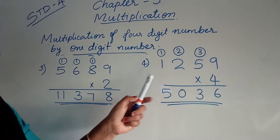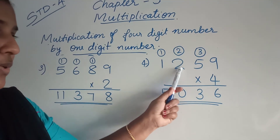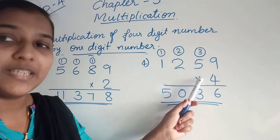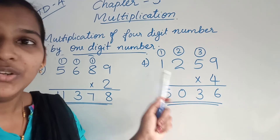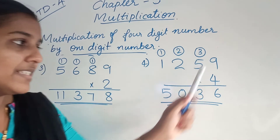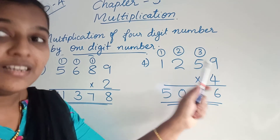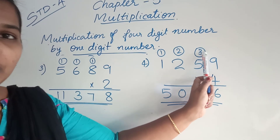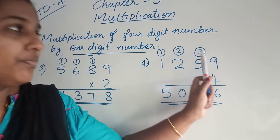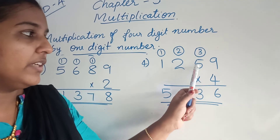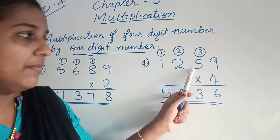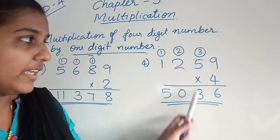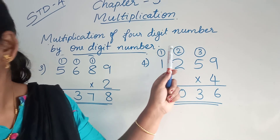Now the next example question: 1,259 × 4. Here you have to multiply all these numbers by 4. 4 nines are 36. From 36, you can write 6 here and 3 carry over to the next place. Then 4 into 5. 4 fives are 20. 20 plus 3 is 23. You can write 3 here and 2 carry over to the next place.